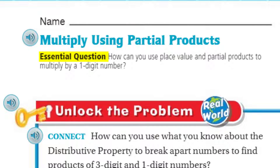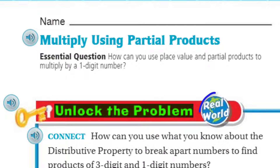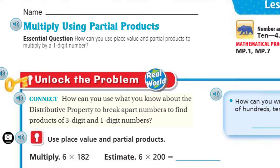This is our learning target — the purpose of this lesson. It says: how can you use place value and partial products to multiply a one-digit number? Even though we've done some of this, we are moving in a direction where we get a better understanding of multiplication. But first, we have to unlock the problem — it's real world! It says: how can you use what you know about the distributive property to break apart numbers to find products of three-digit and one-digit numbers?